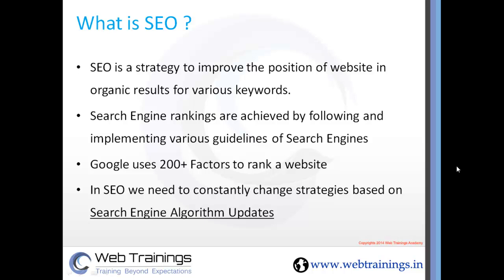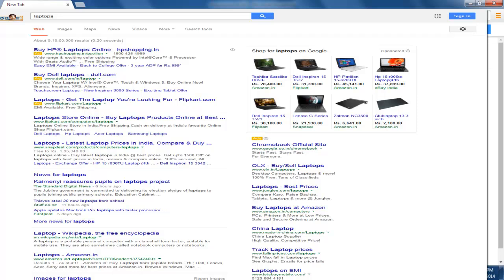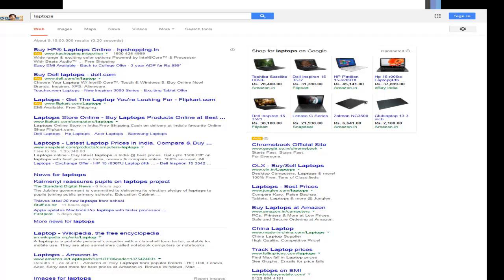SEO is a strategy where our basic need is to rank our website at the top for any query or keyword searched by the user. For example, if you search for 'SEO training' or 'SEO training in Hyderabad,' you get our video or website. Similarly, if you search for 'laptops,' you will get websites like Flipkart and Snapdeal — and that's what SEO is all about: achieving those rankings.